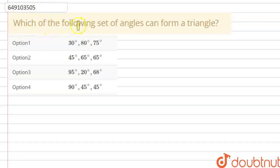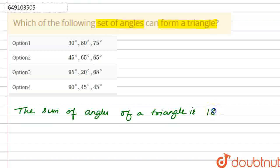Hello everyone, here is our question: which of the following set of angles can form a triangle? We should know the basic identity here. We should know that the sum of angles of a triangle is 180 degrees. We have to use this basic identity.